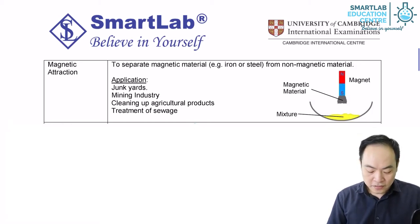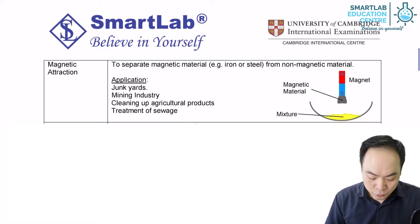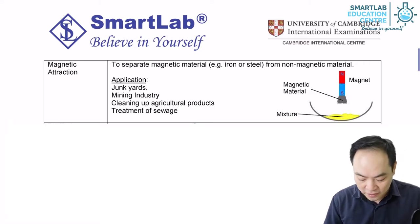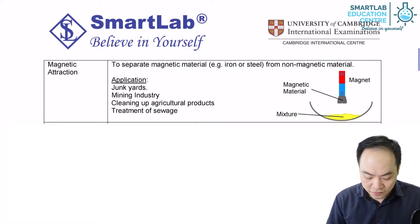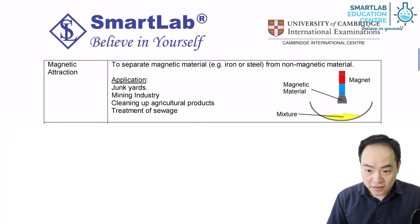Non-magnetic materials are materials which are not attracted by a magnet. Examples of them are wood, paper, water, glass, and many more.